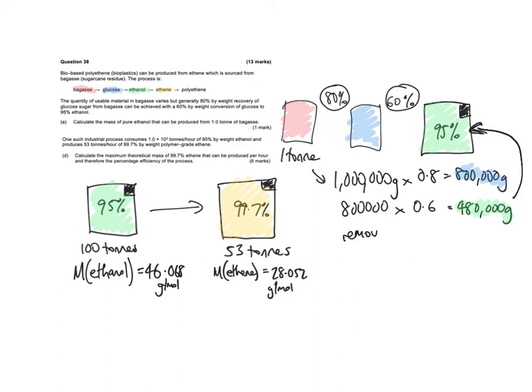Therefore we have to apply the 95% and it gets you 456,000 grams. We have to remove the impurities, remove the 5%. So that's what you need to do in terms of that one, in terms of the one tonne of bagasse. It's useful to think of this as what's the conversion rate and what actually is produced in terms of percentage purity.